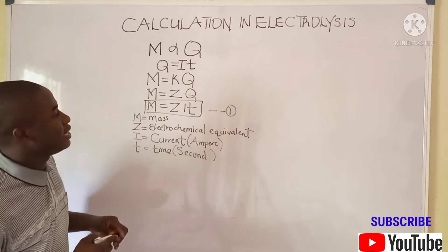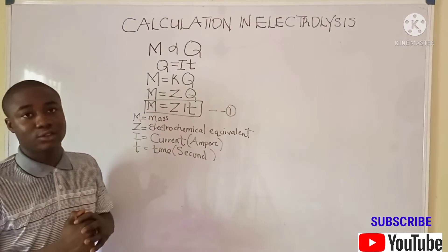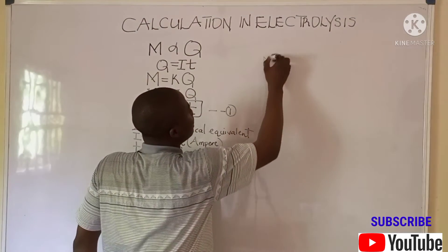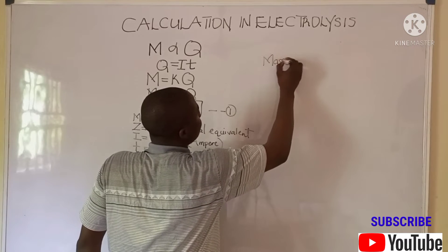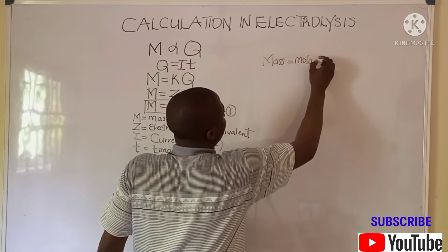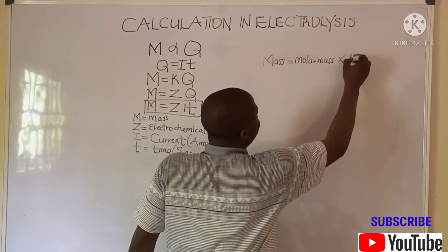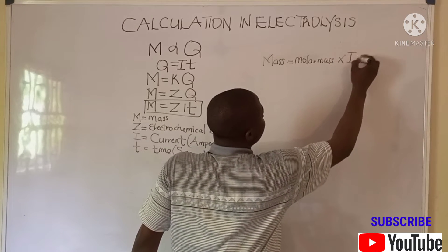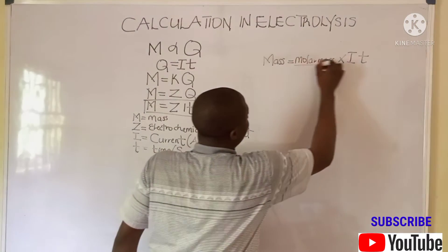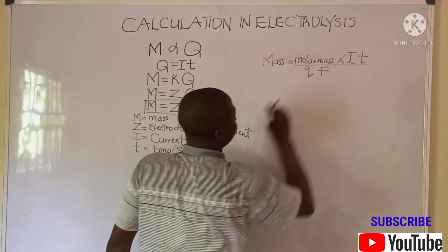There's another formula that must be noted, which is: mass equals the molar mass — or atomic mass — times i (current) times t (time), over qF.